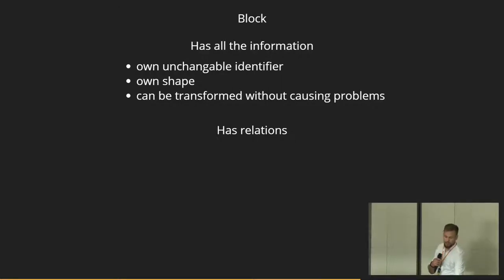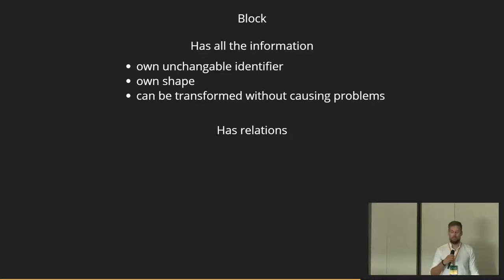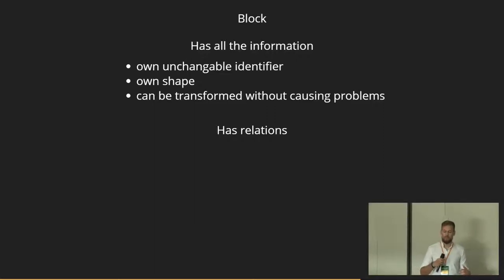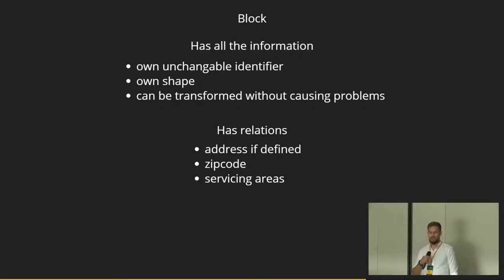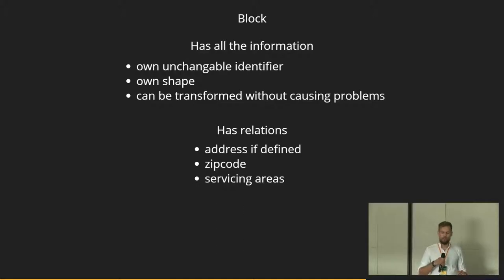A block has relations with classifications, which can be made out of anything. This gives us a lot of information about where it belongs, and this information can be requested without making spatial queries. Some examples we are currently using: addresses, zip codes, and servicing areas. For example, when one block has been selected for multiple courier routes, each week it might be serviced by different courier roads. If we want to know when this one block is serviced by a courier today, we can easily make requests without spatial processing.